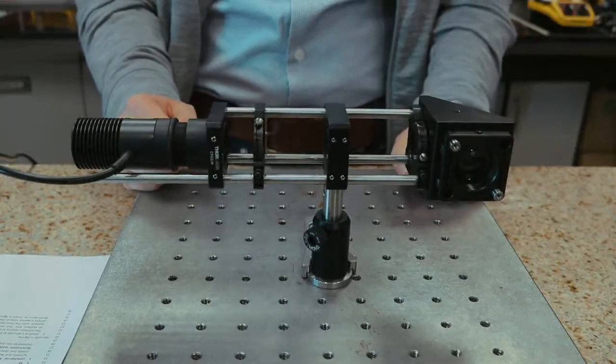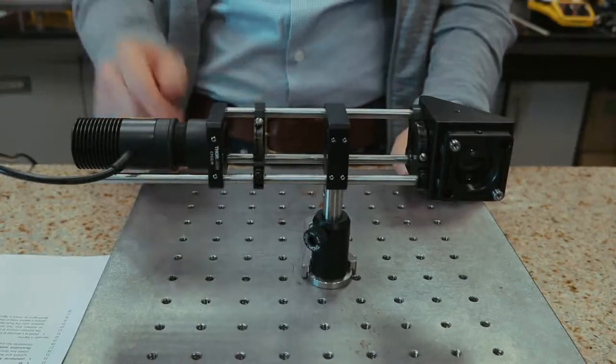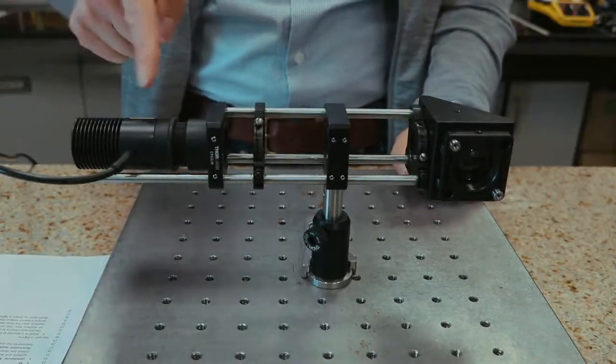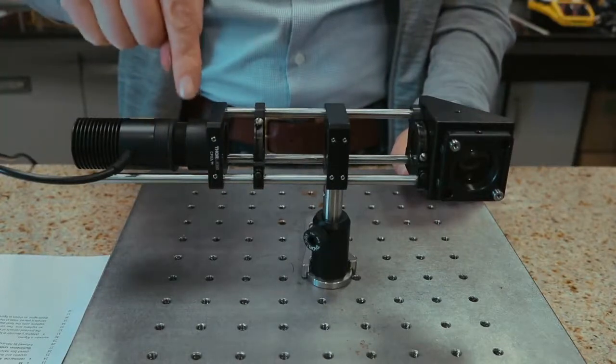Briefly, the setup that can be built with the protocol consists of a light-emitting diode whose light we collect and collimate with an aspheric lens.